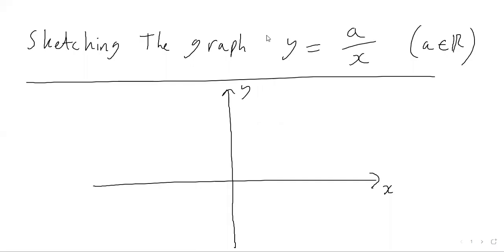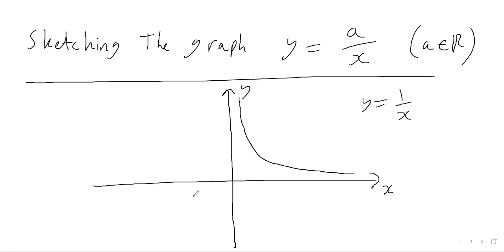In today's video we're going to look at sketching the graph y equals a over x, where a is any real number. You would have seen at GCSE level sketching the graph y equals 1 over x — it looks something like this kind of shape. You can use a table of values to see why this is true; if you substitute x equals 1 you get 1 divided by 1, which gives you 1.